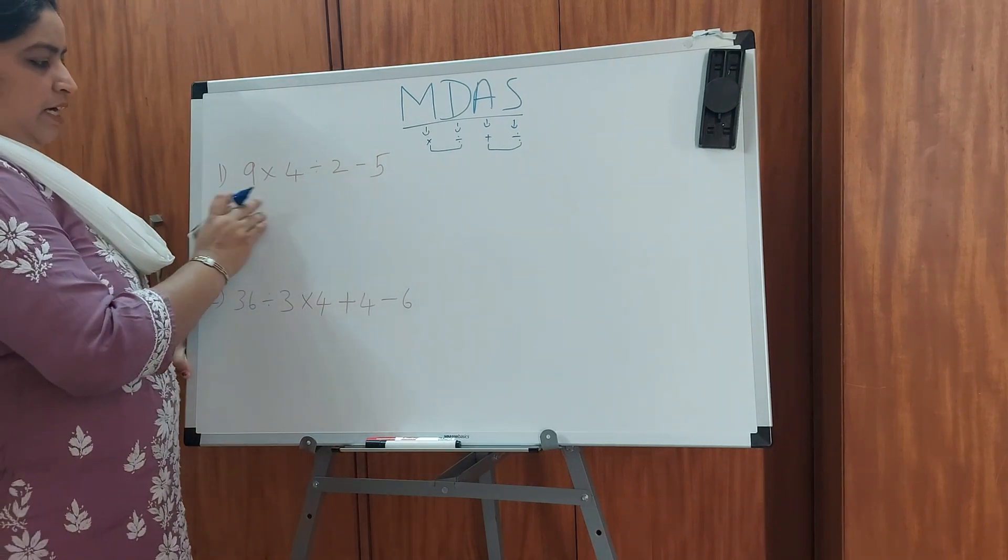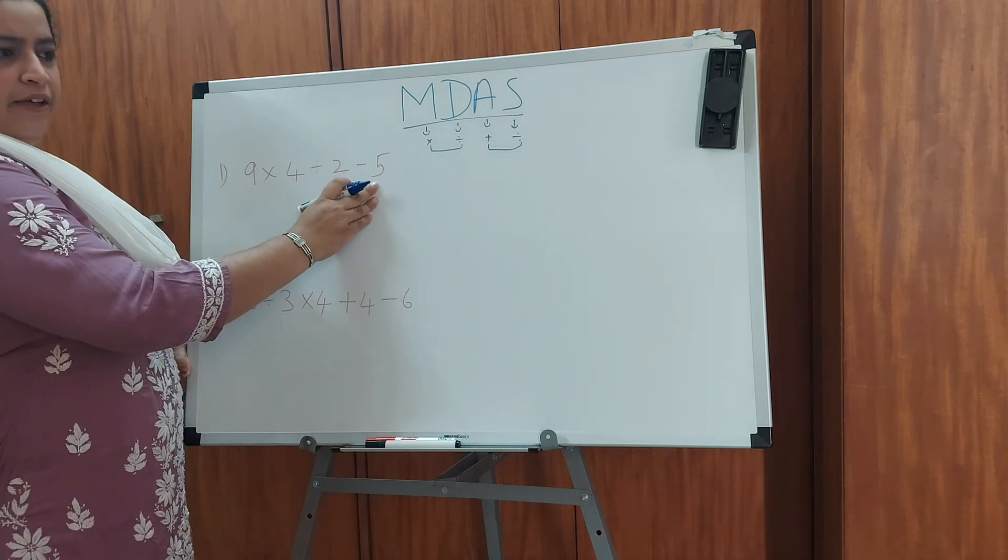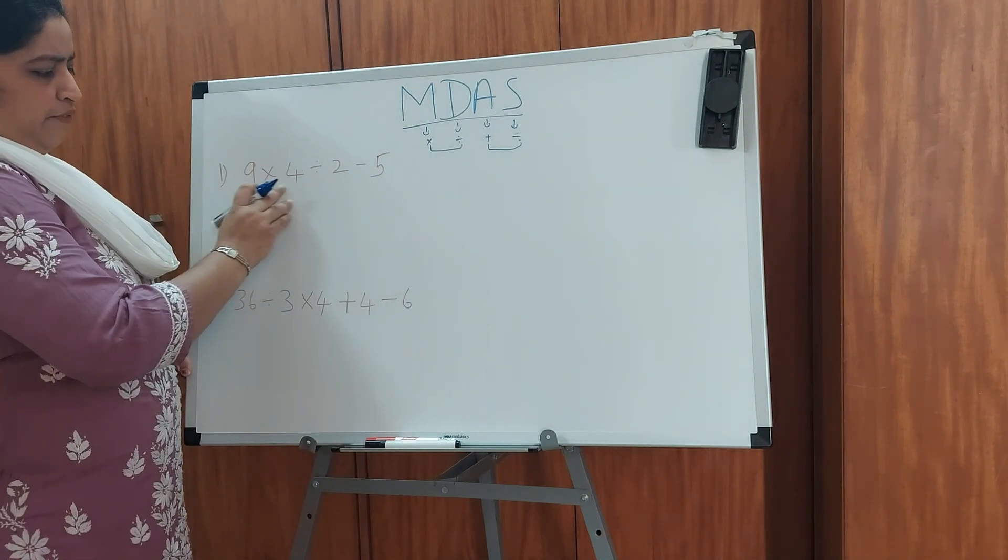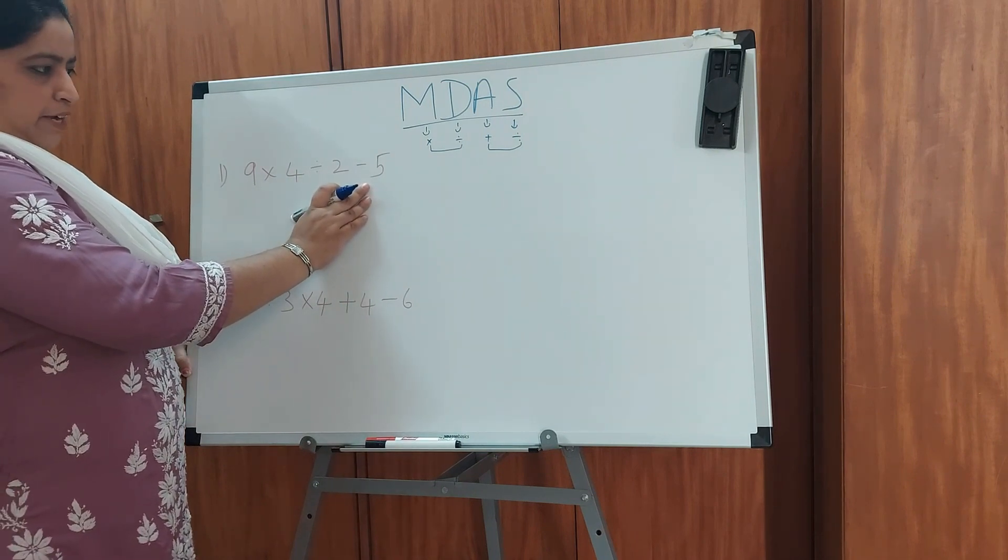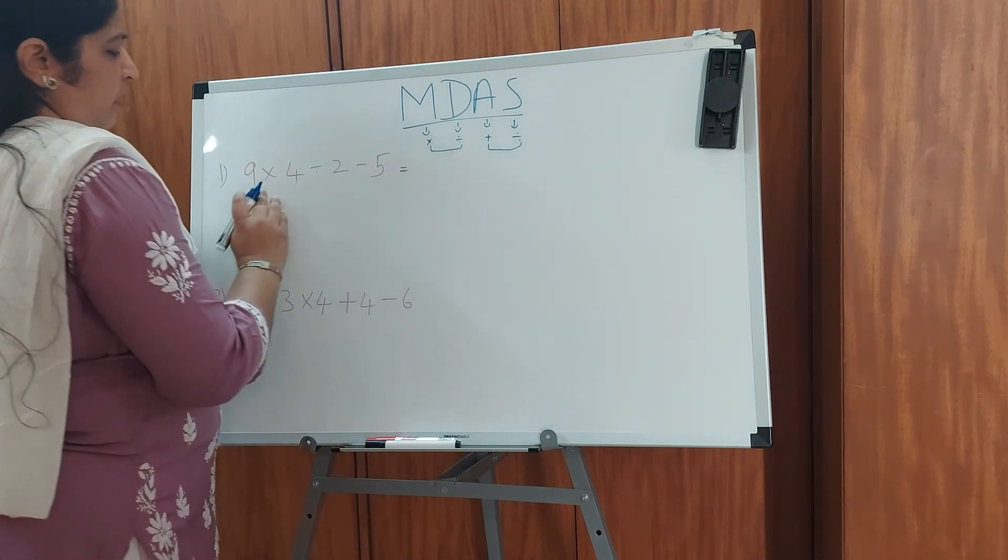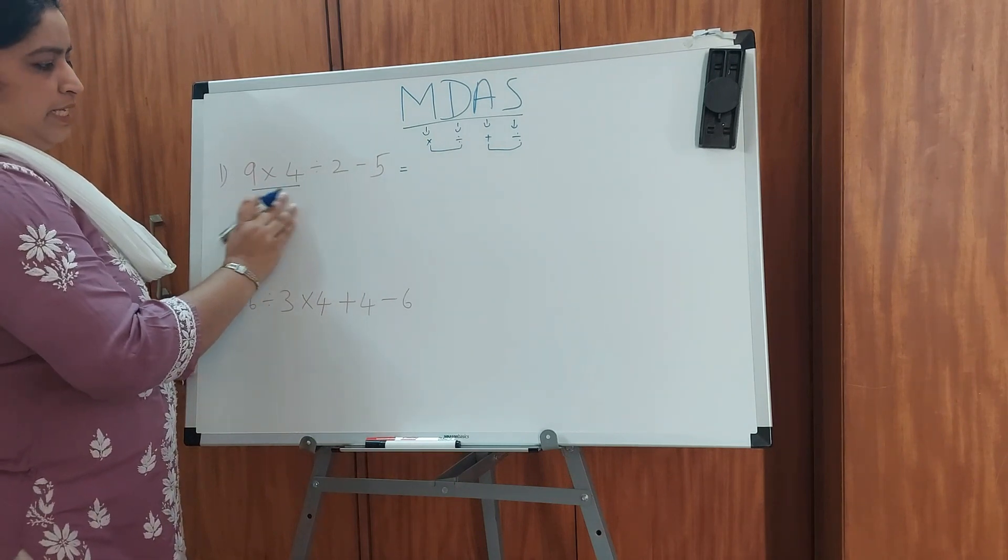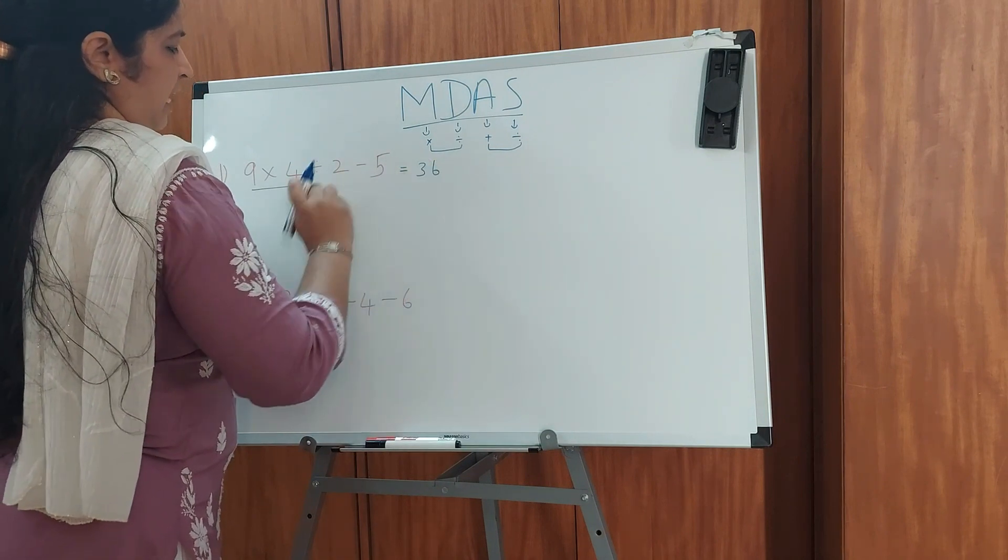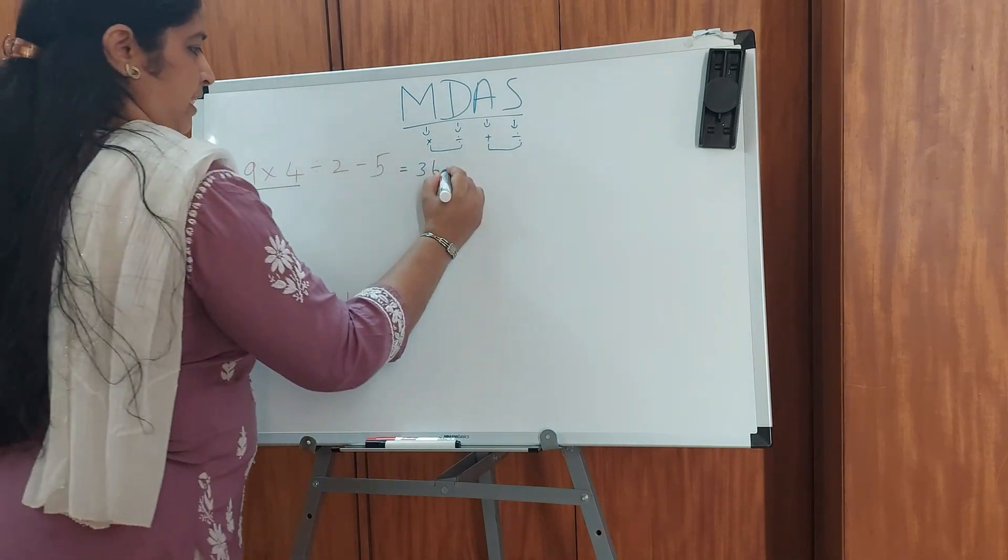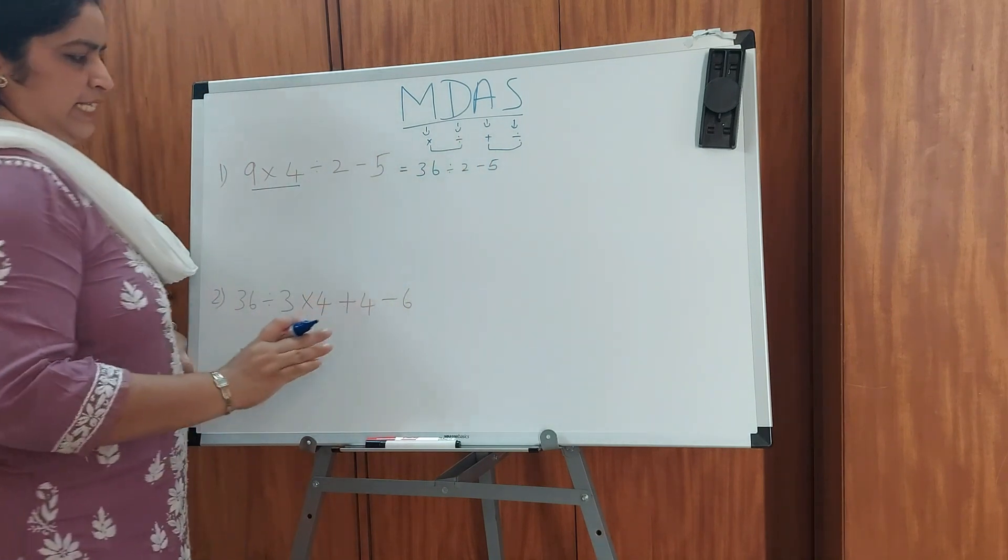So we have a question here: 9 times 4 divided by 2 minus 5. As you could see here, we have multiplication first, then division, then subtraction. So what are we going to do here? First we will do the multiplication. That is 9 times 4. What is 9 times 4? 36. So we write 36 first and I will write the other two numbers as such. Next it is divided by 2 minus 5.